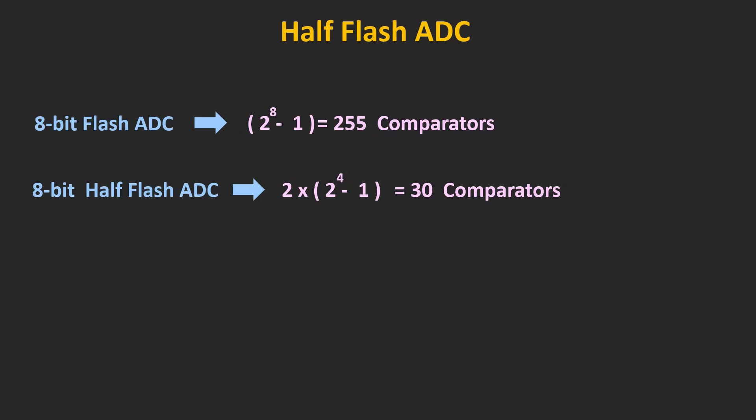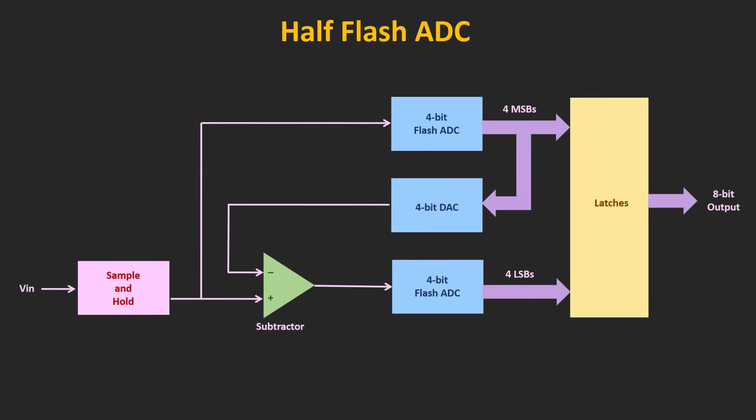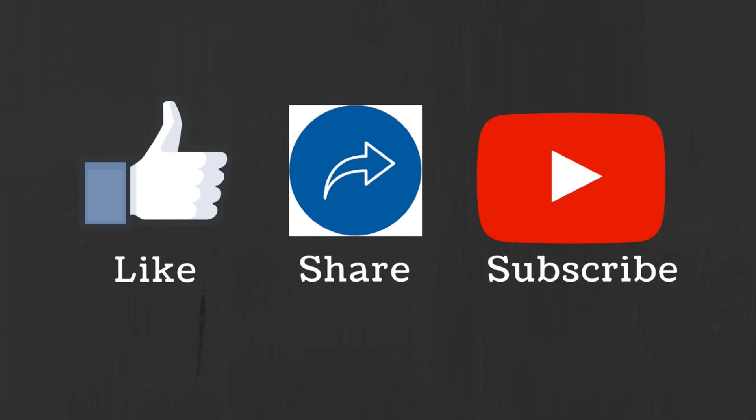This modified version of the Flash ADC can be used in applications where low power consumption and less die size are required. Of course, these ADCs are not as fast as Flash ADCs, but since they use Flash ADCs during conversion, their conversion speed is faster compared to other ADCs. That's it for this video — I hope you understood the working of the Flash as well as the half-flash ADCs. If you have any questions or suggestions, let me know in the comment section below. If you liked this video, hit the like button and subscribe to the channel for more such videos.